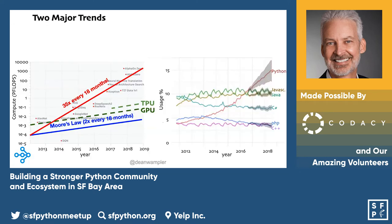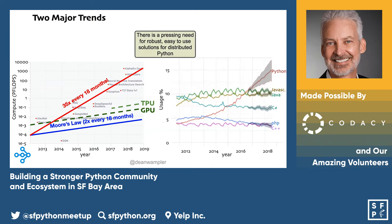So why Ray? There are really a couple of big things going on in our industry. The first is that machine learning models are growing at 35 times in size every 18 months, compared to Moore's Law which is like 2x every 18 months — so it's just outstripping hardware in an amazing way. The Python community is also growing like mad because of all the interest in machine learning, and that's really driving the need for solutions for distributed Python.